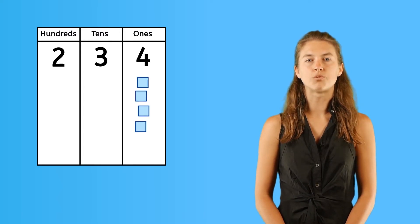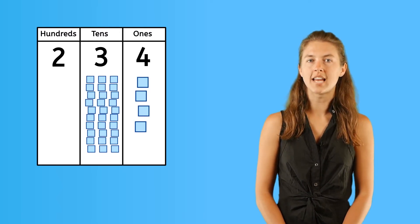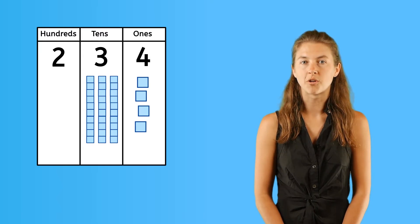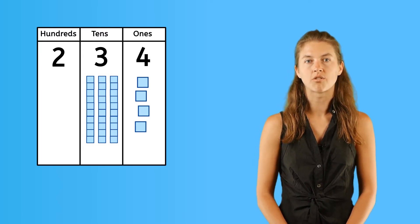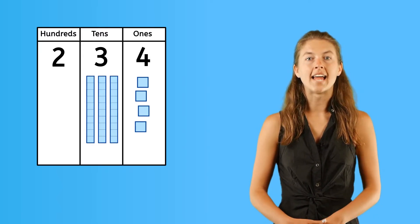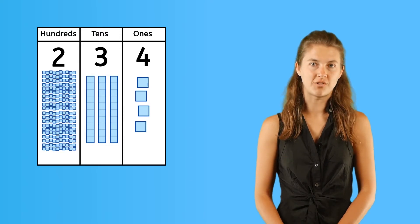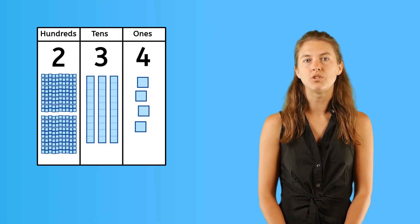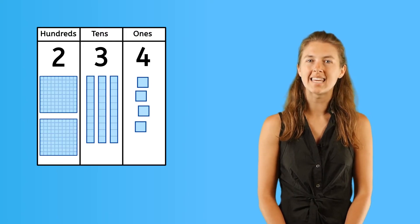This means there are four individual units, three groups of 10 units, which can be shown by grouping individual units into three strips of 10, and two groups of 100 units, which means that 100 individual units are grouped into blocks like these.